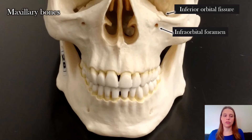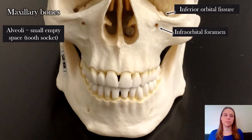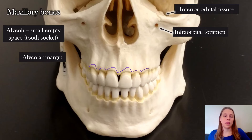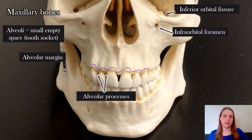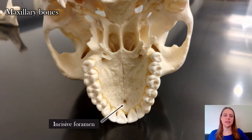In the maxillary bones you have your teeth sockets. The word alveoli is a generic term that means a small empty space; in terms of your face it refers to your teeth sockets. The border around your mouth is the alveolar margin, and each little point in between each tooth is an alveolar process. On the roof of the mouth there's a hole behind your two front teeth, which are your incisors, so that hole is the incisive foramen.